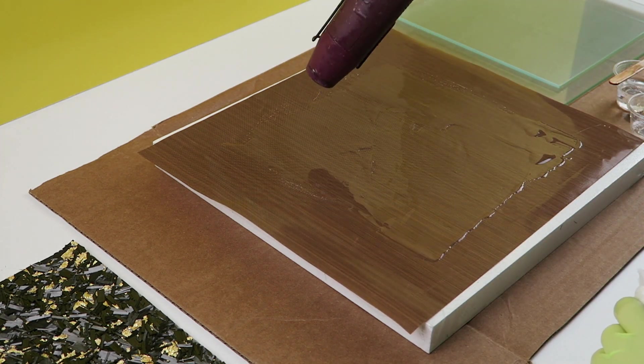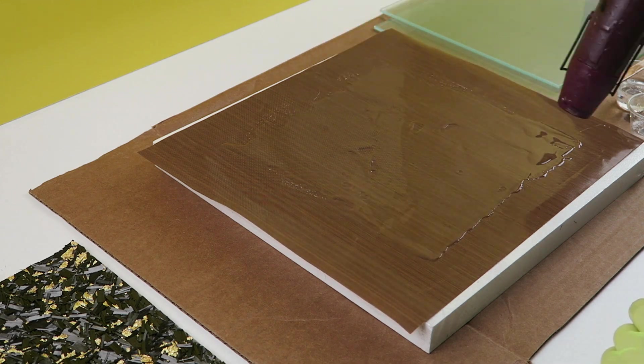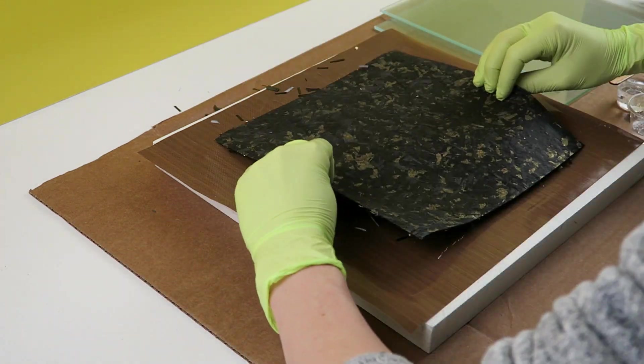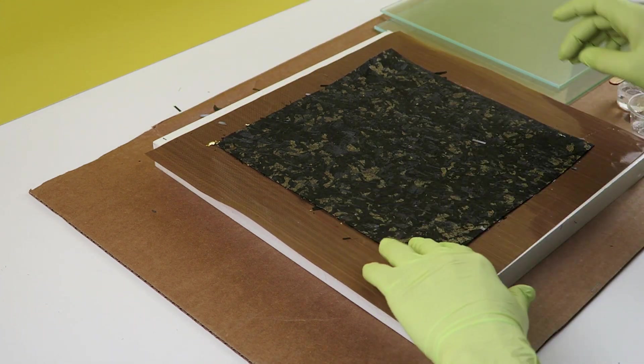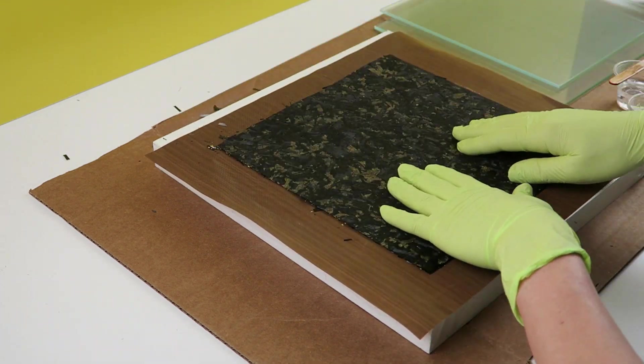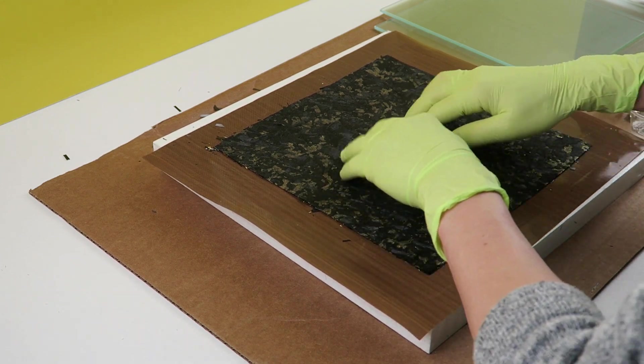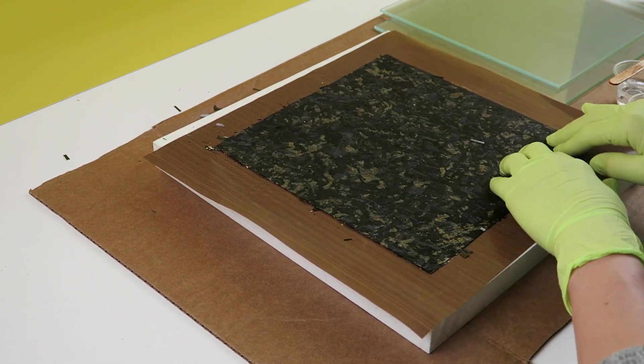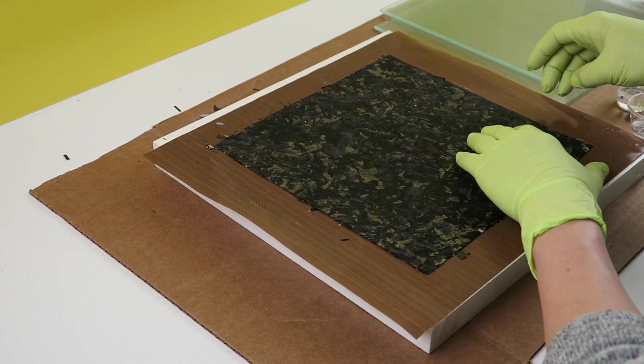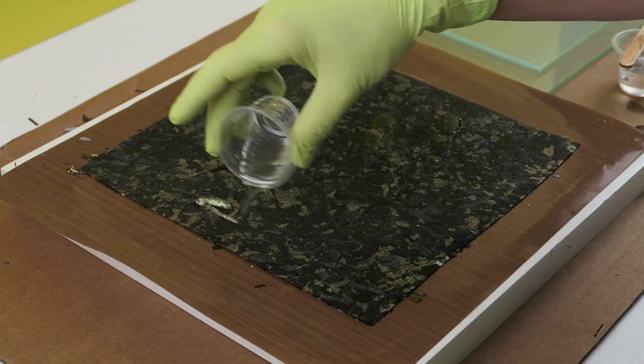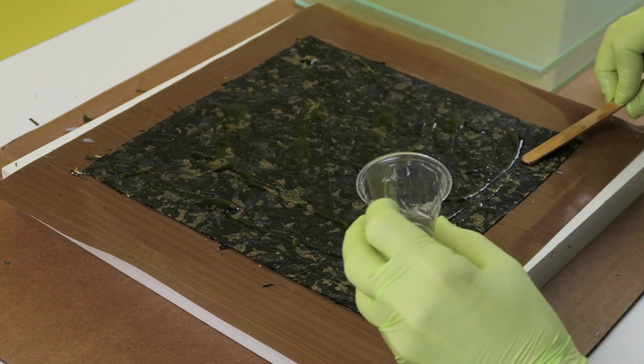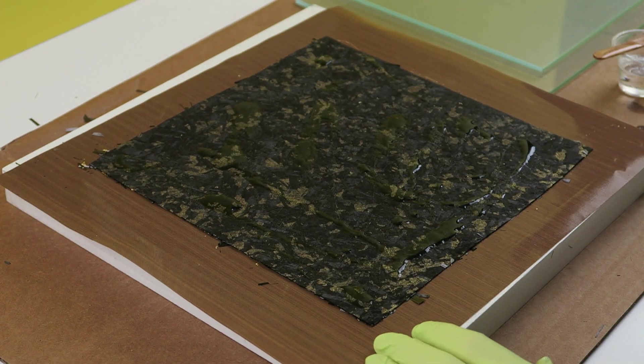Spread epoxy resin onto the peel-ply and pop the bubbles with a heat gun. Place the forged carbon fiber fabric face down into the resin and press to remove air pockets. Add more resin to the back of the fabric and continue distributing the resin and pressing to eliminate voids.